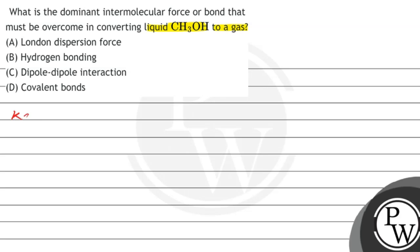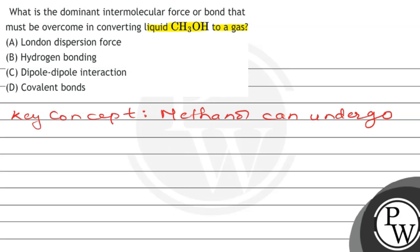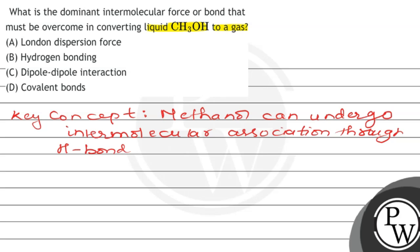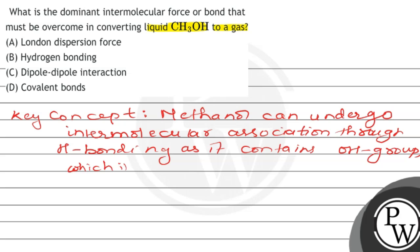Please note that the key concept of this question is that methanol can undergo intermolecular association through hydrogen bonding, as it contains an OH group which is highly polarized.